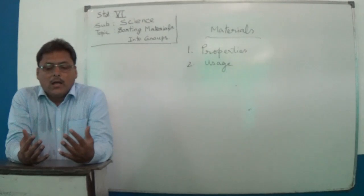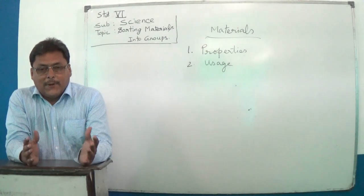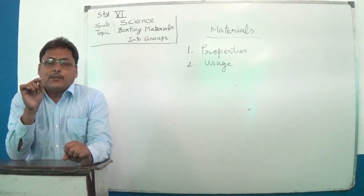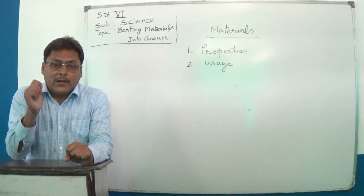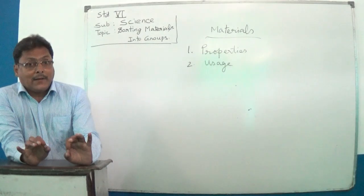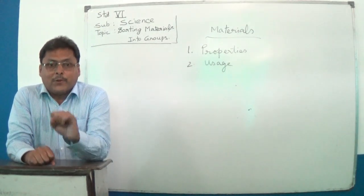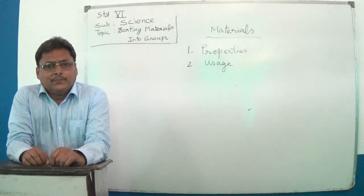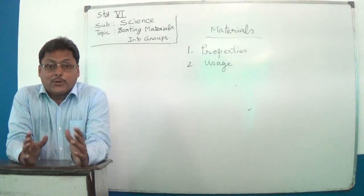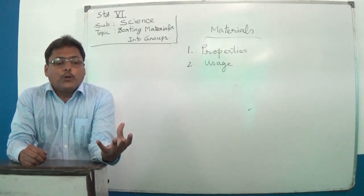Now that we know how and why we classify different materials, we need to learn the actual characteristics of those things. We must learn about some basic characteristics of each material so that we can use it in its best way. For example, wood is very nice, very durable, very good to look at, and very hard — useful for making tables, chairs, and doors.